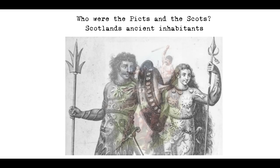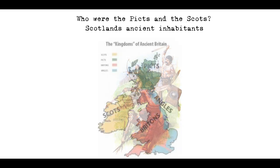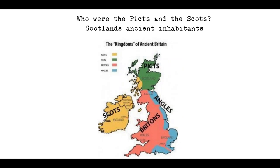The Scots, on the other hand, were a Gaelic-speaking people of Ireland who migrated to Scotland in the early Middle Ages. The Kingdom of Dalriada, located in modern-day Argyll and Bute, was established by these migrants and was the counterpart to Dalriada in Ireland. St Columba played a key role in introducing Christianity to the Scots and helped raise Aedan to the kingship of Scottish Dalriada in the 6th century. Over time, the Scots expanded eastward and northward, eventually merging with the Picts to form the Kingdom of Alba.